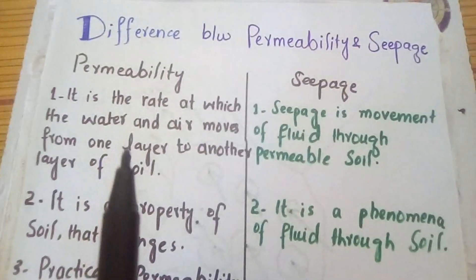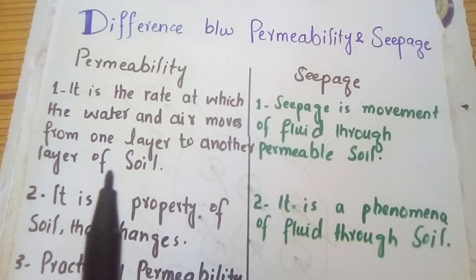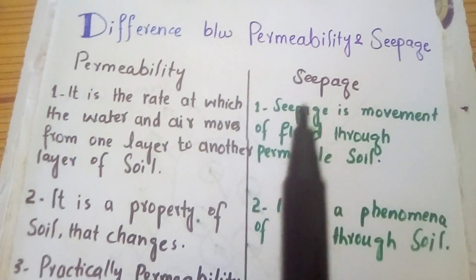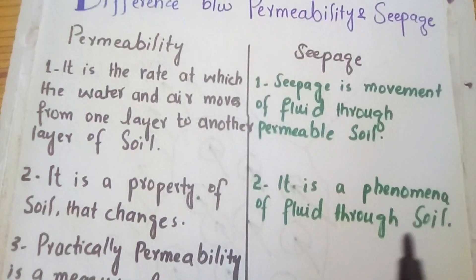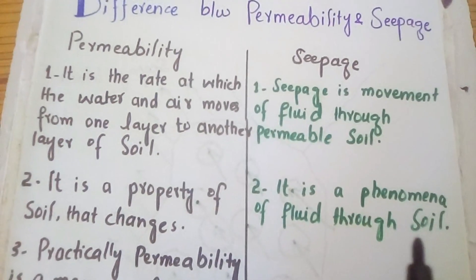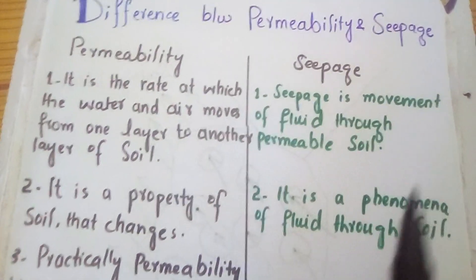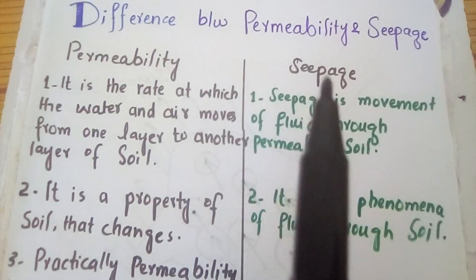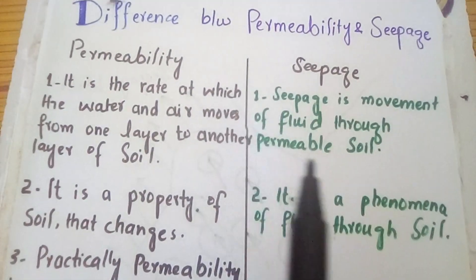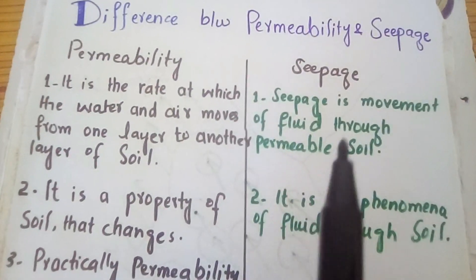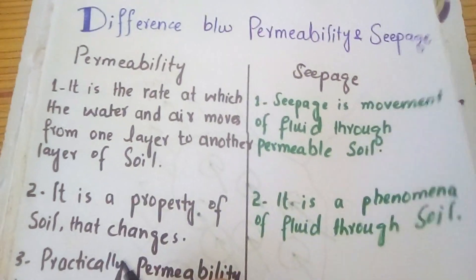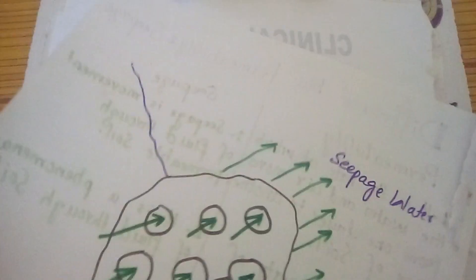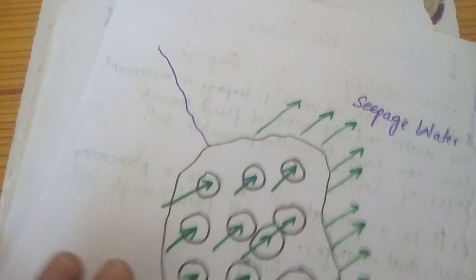Seepage, on the other hand, is actually a phenomenon of flow through a soil — it is the movement of flowing water. I have illustrated this concept with a diagram.